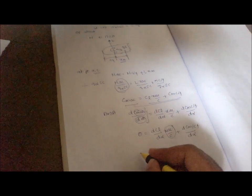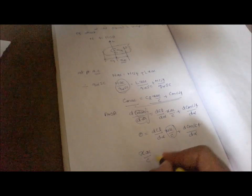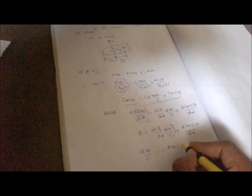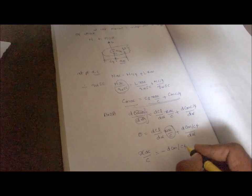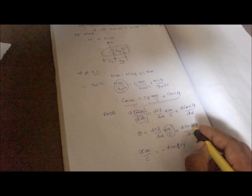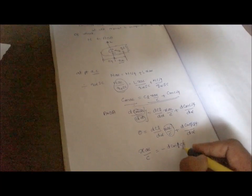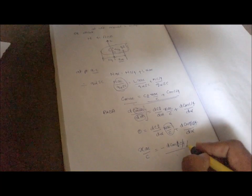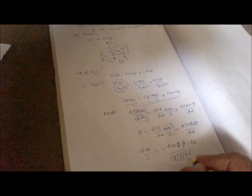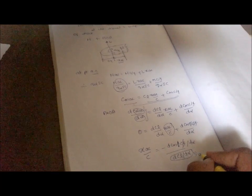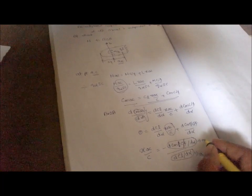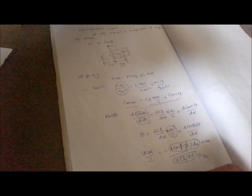So you understand X_AC by C is equal to minus dC_M_C/4 by d alpha divided by dC_L by d alpha.